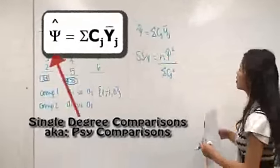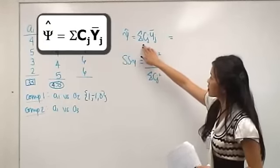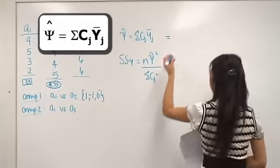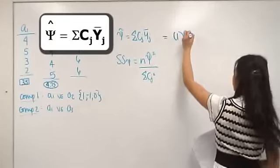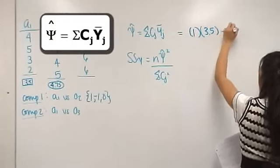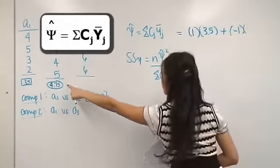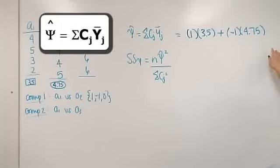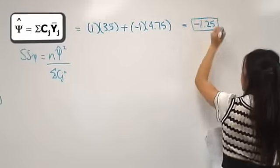So we're going to do this one first. Psi, that refers to our single degree of freedom comparison. We're going to do the sum of all the coefficients times the means of the groups that we're comparing. So my coefficient for A1 is 1, times my mean for group A1, which I calculated to be 3.5. I'm going to add that to my coefficient for A2, which is minus 1, times my mean for A2, which is 4.75. You would also add the coefficient of A3, which is 0, so we're just going to take that stuff out. And that's my psi.